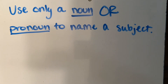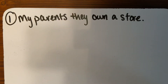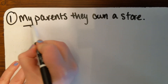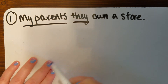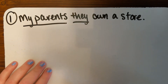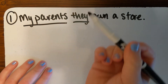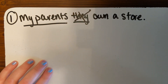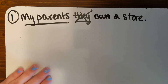Let's look at some examples. Number one: 'My parents, they own a store.' Which of these words is unnecessary? We have two subjects here and we only want one. We need to choose between 'my parents' and 'they.' If we cross out 'they,' we get 'My parents own the store.' That makes sense.